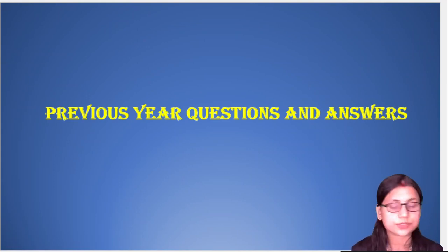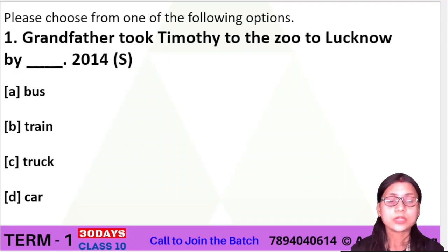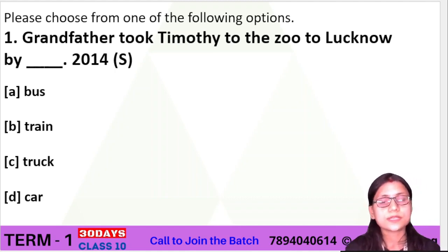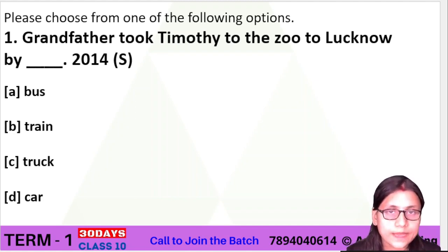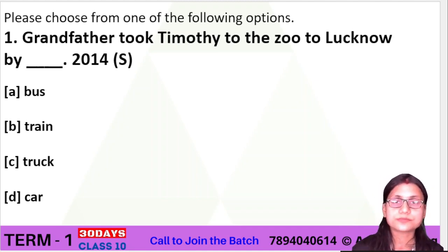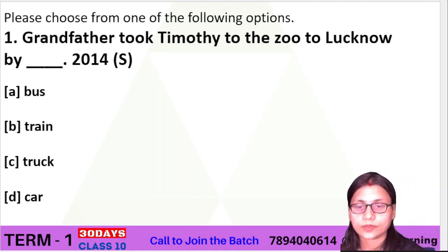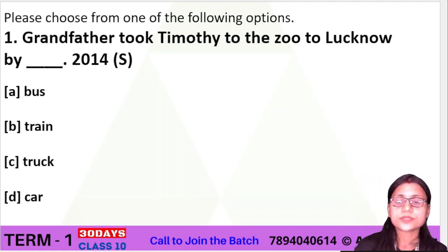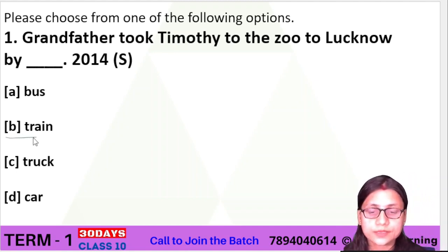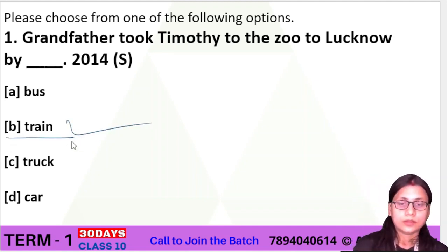Here is the first question: you should choose from one of the following options. First question — 'Grandfather took Timothy to the zoo at Lucknow by dash.' This question appeared in the 2014 supplementary examination. There are four options: option A — bus, option B — train, option C — truck, option D — car. The right answer is option B, train.